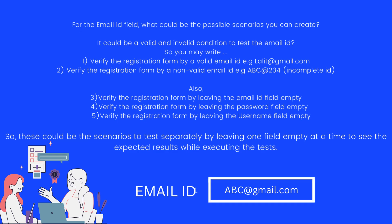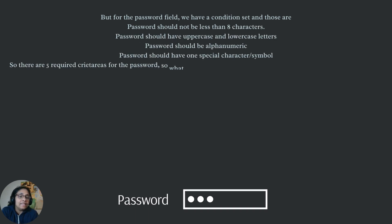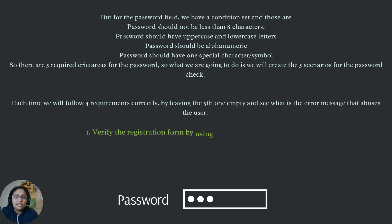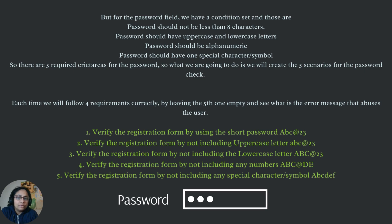For the password field, we have conditions set: the password should not be less than 8 characters; password should have uppercase and lowercase letters; password should be alphanumeric; password should have one special character or symbol. There are four required criteria for the password. We will create five scenarios for the password check — each time following four requirements correctly and leaving the fifth one to see the error message. The first one is: verify the registration form by using a short password — for example, abc@23 — which is less than 8 characters and very short.